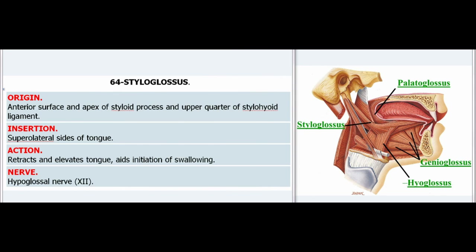64. Styloglossus. Origin: Anterior surface and apex of styloid process and upper quarter of stylohyoid ligament. Insertion: Superolateral sides of tongue. Action: Retracts and elevates tongue, aids initiation of swallowing. Nerve: Hypoglossal nerve (XII).